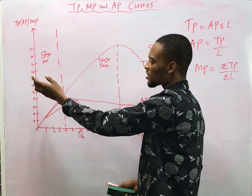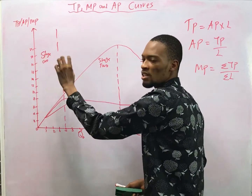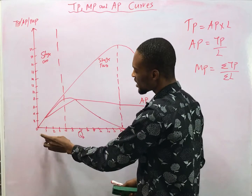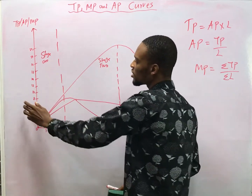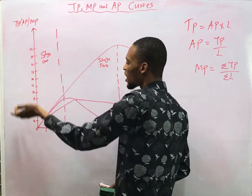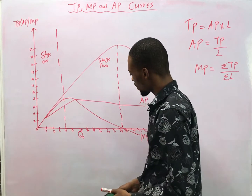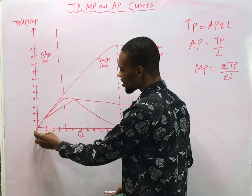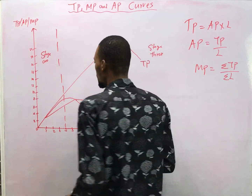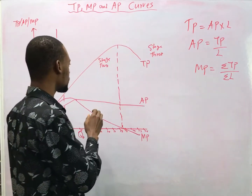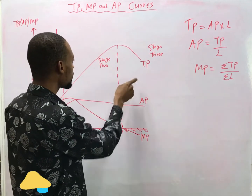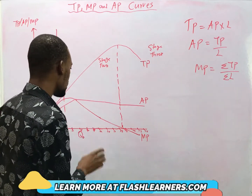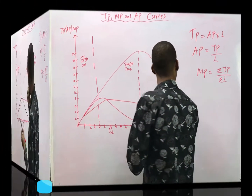These are the various units of input and this is the unit of output. This is the origin, starting from zero. Now look at the curves for total product, average product, and marginal product.